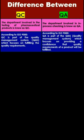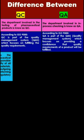According to ISO 9000, QC is the part of the quality management system which focuses on fulfilling the quality requirements. According to ISO 9000, QA is the part of the QMS which focuses on providing confidence that quality requirements of the product will be fulfilled.